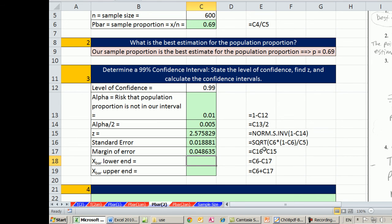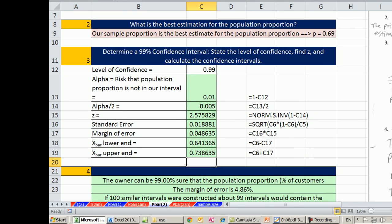We'll take our standard error times our z equals standard error times z. Now we have our margin error. We just simply take our p bar, subtract the margin of error. Take our p bar, and add the margin of error. OK.